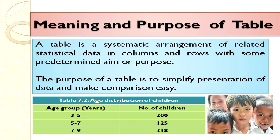We are arranging systematically related statistical data in rows and columns for a predefined purpose. The purpose of a table is to simplify the presentation of data and make comparison easy. For example, from a table we can see age groups of children and how many children are in each particular age group. So with the help of a table we can simplify data presentation and make comparison easy.